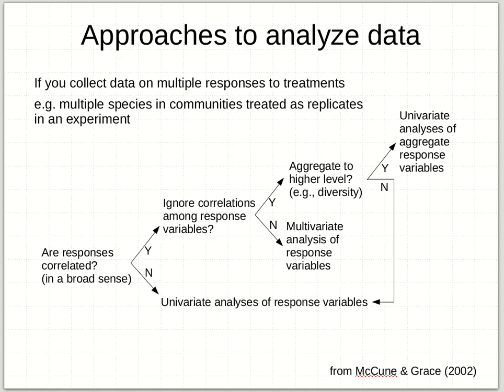Imagine you collect data on multiple responses to treatments — for example, an experiment in several communities where each data point represents a species response. You might aggregate that to a diversity measure. But a useful flowchart starts with the question: are the responses correlated? If I sprinkle fertilizer in a field, I might expect many plants to respond in some correlated way — positive or negative — among all the different species in those plots. If yes, responses are correlated, then do you want to ignore those correlations among the response variables or pay attention to them?